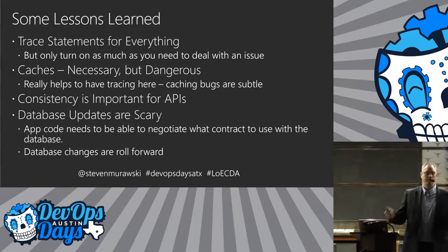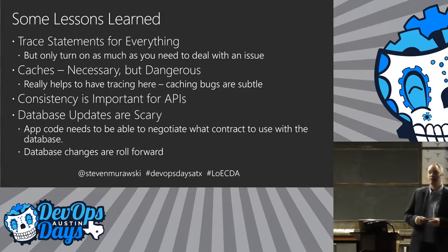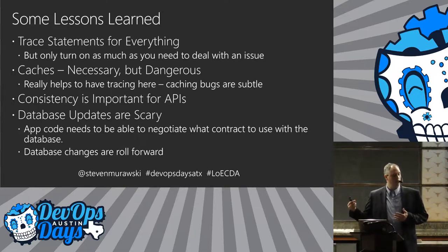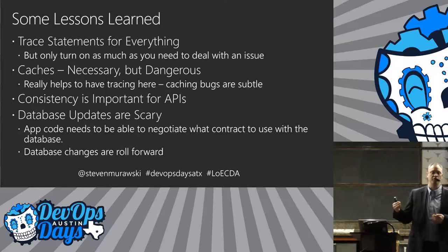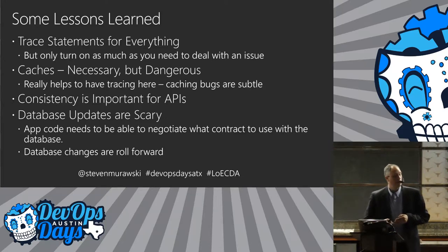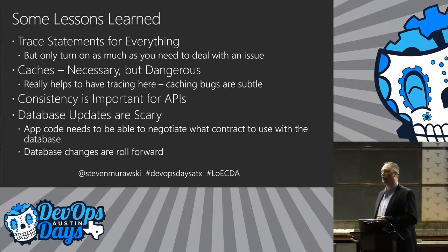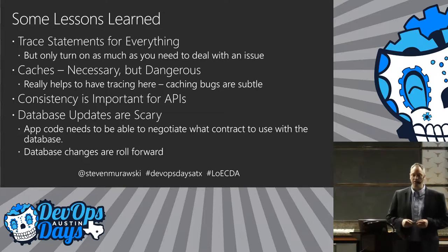One of the other major lessons learned was that database updates are scary. TFS was driven by its database, so you needed to be very careful that the app could talk to the database properly. They eventually settled on a pattern where the application needs to be able to talk to the current version and a previous version and negotiate that with the database. They also realized rollback was not going to be an option. If something goes wrong with a database change, you roll forward. You're not restoring old databases — too much change is happening. Everything had to become roll forward.